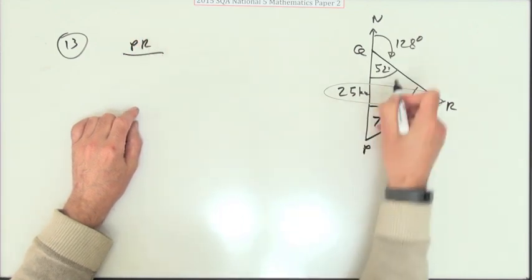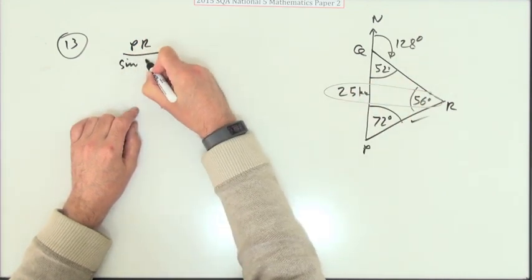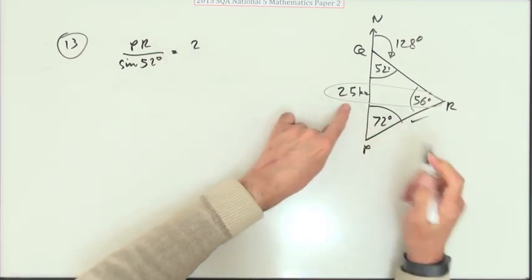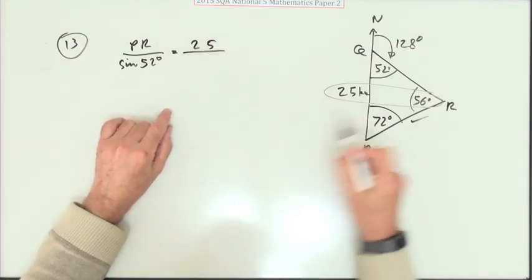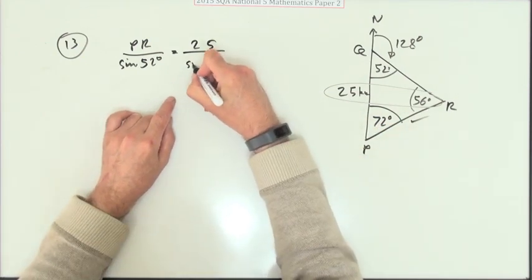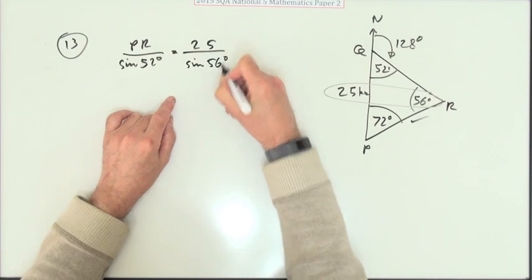PR over its angle, sine of 52 degrees equals the one that you know, 25, over the sine of its partner angle. The angle subtended by it, over the sine of 56 degrees.